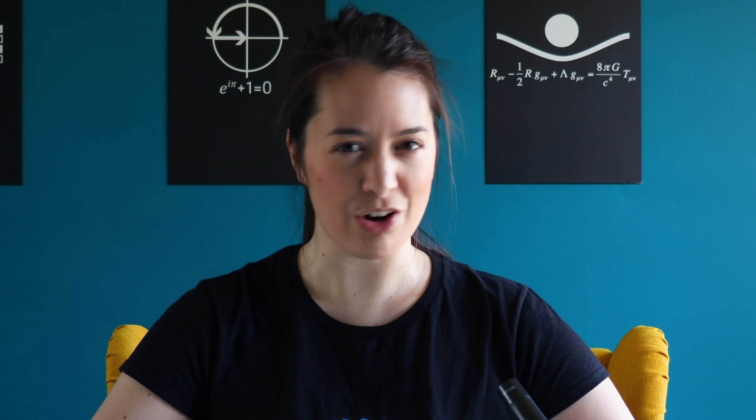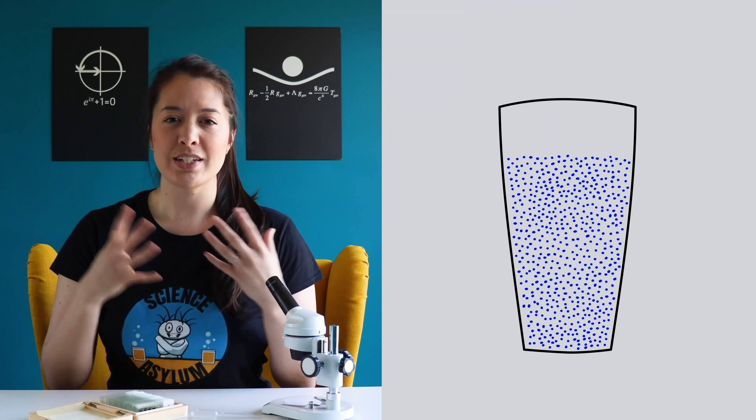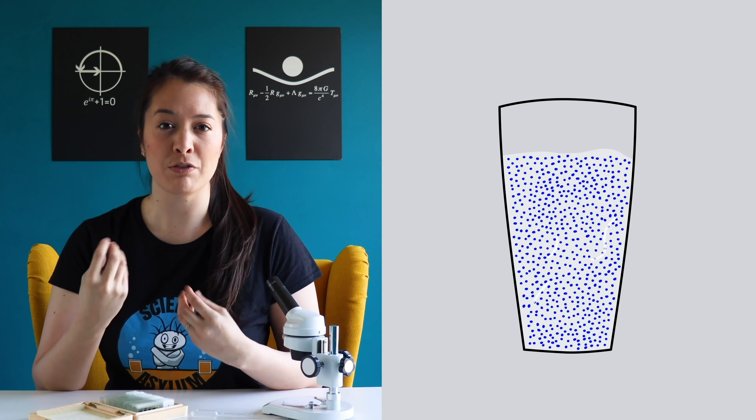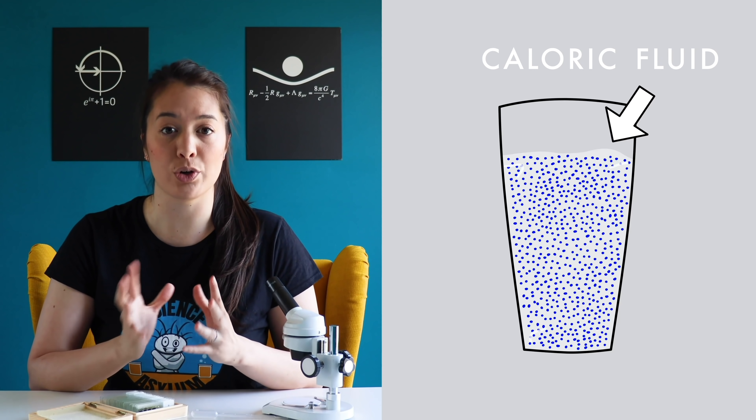Eventually, Brown moved on to other experiments without solving the problem — he was probably having a tough time convincing his colleagues in the botany department that looking at pollen under a microscope was the best use of his time. But we are not going to give up. Now, before we go on, let's get a little context for some of the scientific views at the time. Atoms had not yet been discovered, and the popular understanding of liquids and gases was that they were densely packed with particles and surrounded by an invisible substance called caloric fluid.